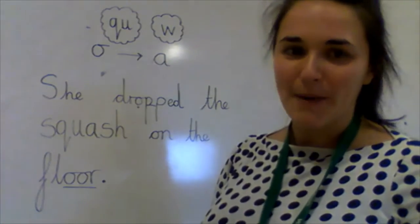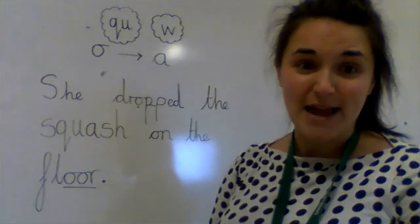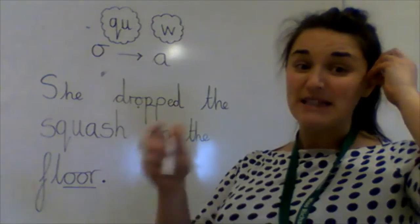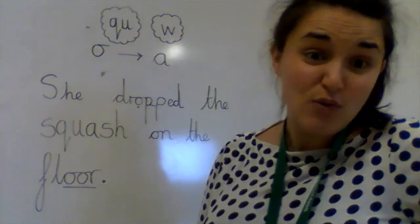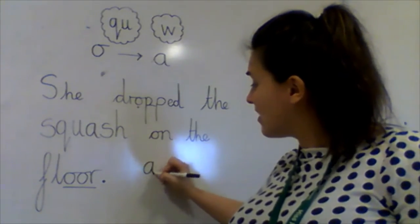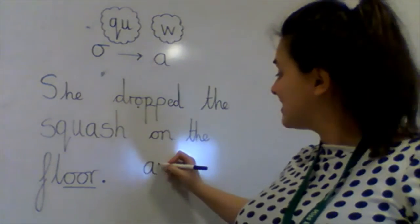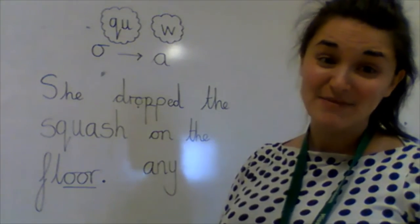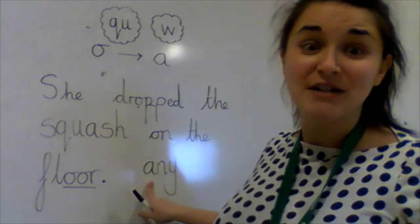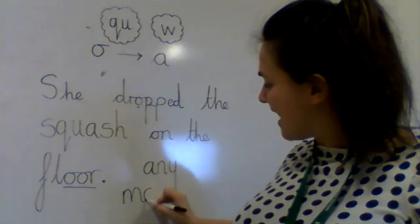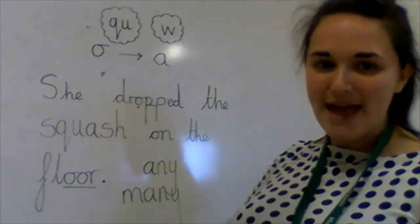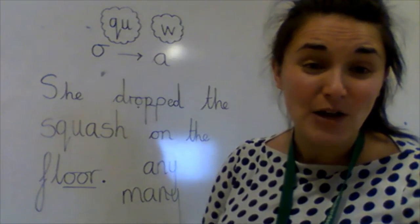We're going to end our phonics session today by learning two new tricky words. The first tricky word is 'any'. With your pen and paper, see if you can write it already — see if you know it. Any. It sounds like it starts with an 'e', but actually it starts with an 'a' — it's like 'Annie', but it's actually the word 'any'. And if you can spell the word 'any', you can spell the word 'many' — it's exactly the same, but it starts with an M. Many, any. Practise these words ready for Friday's spelling quiz, boys and girls.